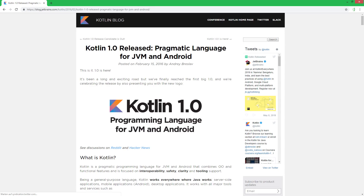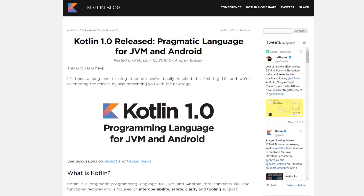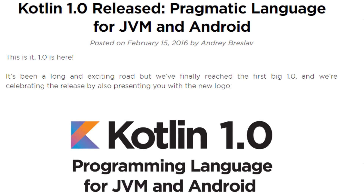Kotlin is a relatively newer programming language. It was first announced in 2011, and version 1.0 was only released in 2016. Java, in comparison, is 20 years older than that. And the reason why I compared to Java this whole time is because Kotlin was basically designed as a better and more modern version of Java.